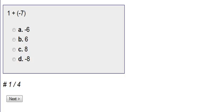In this now you try, number 1, we have 1 plus negative 7. Since we have more negatives than positives, we know our answer is going to be negative. A positive 1 and a negative 7 gives us negative 6. Therefore, your answer should have been negative 6.